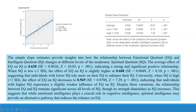Conversely, when SQ is high, the effect of EQ on IQ decreases to 0.569, indicating that individuals with higher SQ experience a slightly weaker influence of Emotional Quotient on Intelligent Quotient. Despite these variations, the relationship between EQ and IQ remains significant across all levels of SQ, though its strength diminishes as SQ increases.